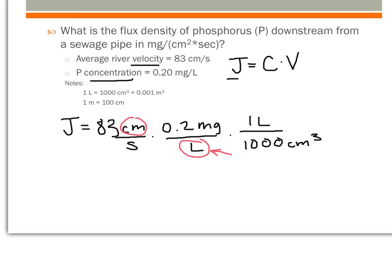Then you can see that these centimeters cancel out, the liters cancel out, and we end up with centimeters squared or an area. So we end up with the right units. And when we multiply all of these numbers out, we end up with essentially 1.7 times 10 to the negative 2 milligrams per centimeters squared times seconds.